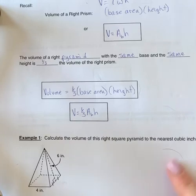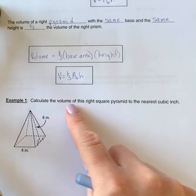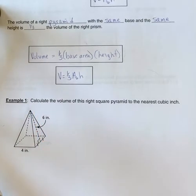So let's look at an example to use that formula right here. Calculate the volume of this right square pyramid to the nearest cubic inch.